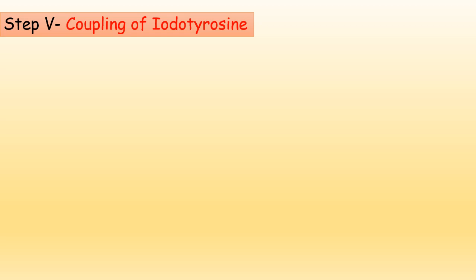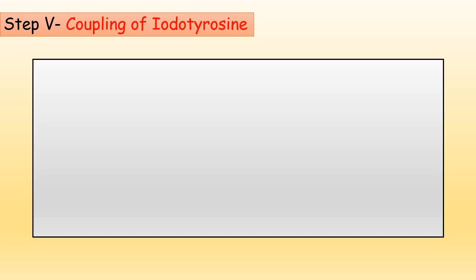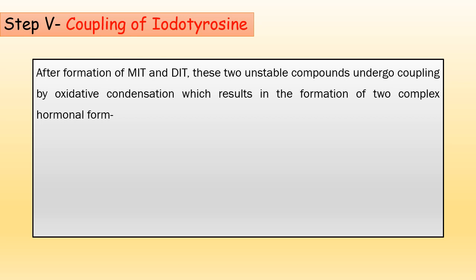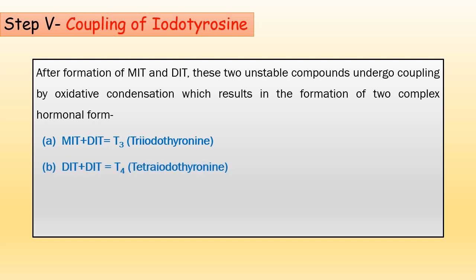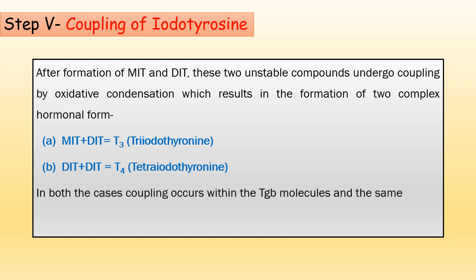The next step is the coupling of iodothyrosines. Thyroglobulin is produced in the lumen, tyrosine is iodinated, and monoiodothyrosine and diiodothyrosine are produced. These two unstable compounds couple by oxidative condensation. When MIT couples with DIT, it forms T3, that is triiodothyronine, and when DIT couples with DIT, it forms T4, thyroxine. In both cases, coupling occurs within the thyroglobulin molecule, and the same enzyme, thyroid peroxidase, catalyzes the coupling reaction.